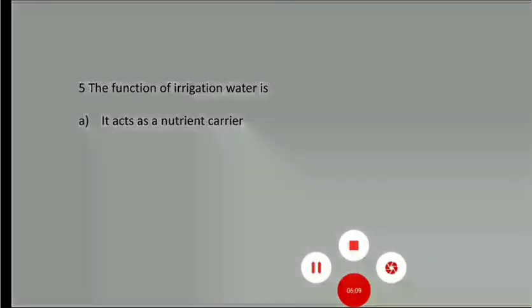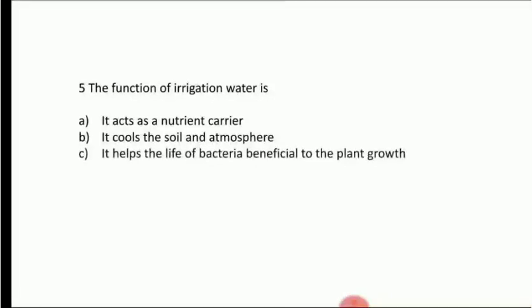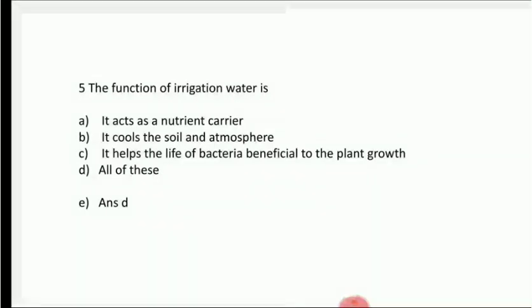Next question: the function of irrigation water is — Option A: it acts as a nutrient carrier, Option B: it cools the soil and atmosphere, Option C: it helps the life of bacteria beneficial to plant growth, Option D: all of these. Answer is all of these. Irrigation water is an effective nutrient carrier, has a cooling effect on soil and atmosphere, and supports beneficial bacteria in the soil.